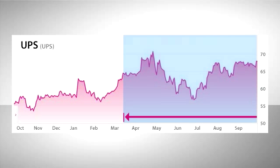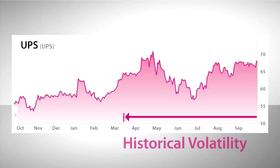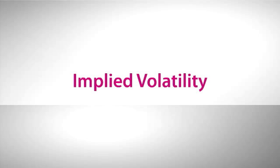So when you look at the past to measure what traders call historical volatility, your calculation will be different depending upon how far you look back. But implied volatility is something different — it's the expectation for future volatility that's implied by how options are priced.